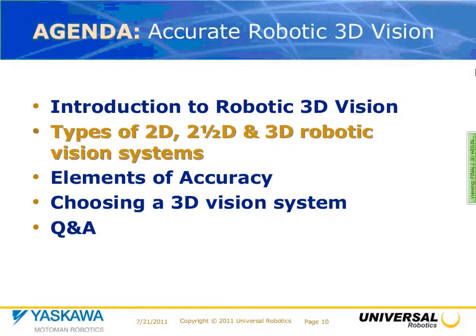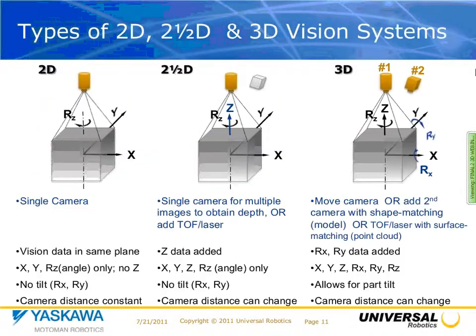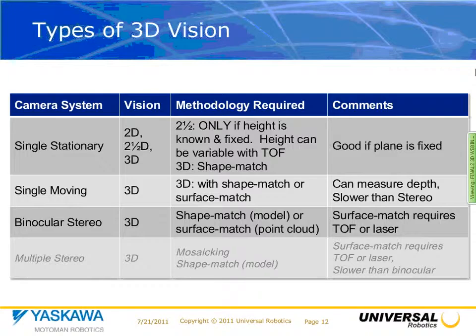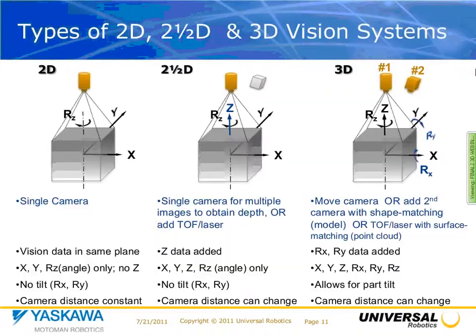Now let's talk about types. We have three different models: 2D, 2.5D, and 3D. In 2D, you have a single camera, and the information you get is X and Y reading — no depth — and rotation around Z. For 2.5D, you have a single camera, and typically you add a time-of-flight or laser that gives you the Z depth. If you have a stamped part or a constant Z depth on a conveyor or laying flat, 2.5D is sufficient because there's no tilt orientation.